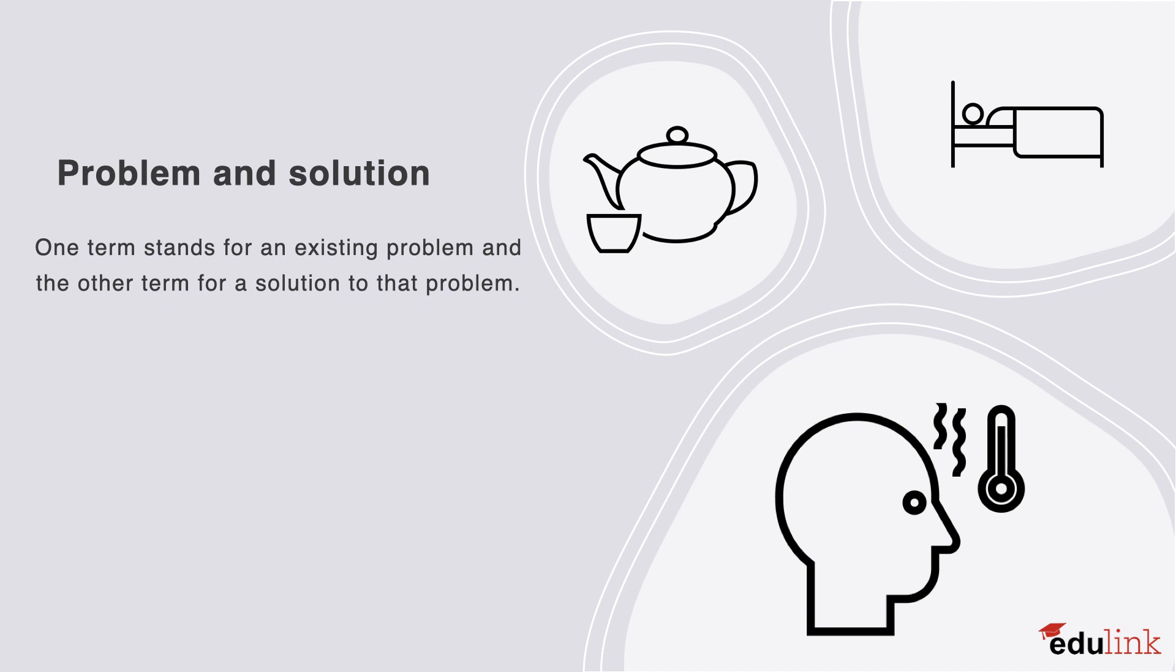Just like cause and effect, another type of relation that we often talk about in everyday life is problem and solution. This is when one term stands for an existing problem, and the other term for a solution to that problem. For example, when one is tired, the solution could be to rest. When something is wet, the solution could be to dry it. And when there's a mistake, the obvious solution would be to correct it.